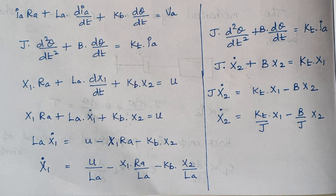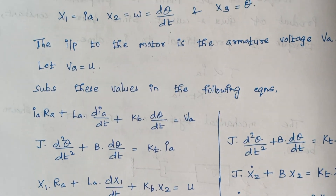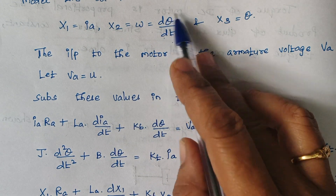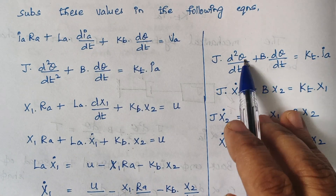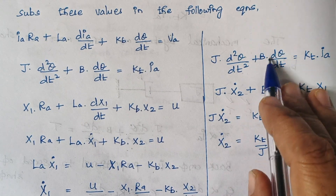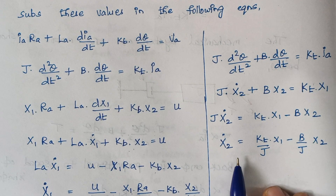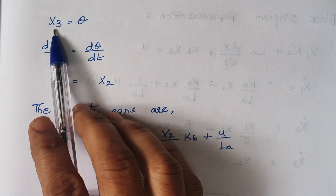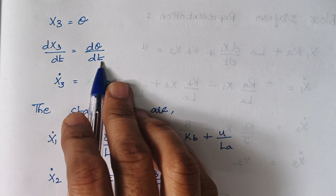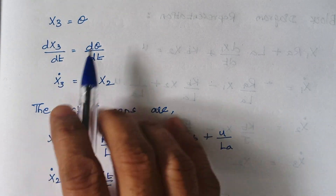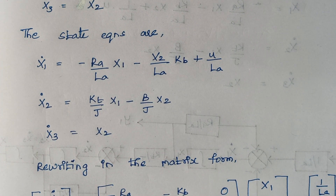Now consider the second equation. Replace the values: dθ/dt is X2, so d²θ/dt² is X2 dot. So J·X2 dot + B·X2 = KT·X1. Rearrange to frame an expression in terms of X2 dot. Also, since X3 = theta, differentiating gives X3 dot = dθ/dt = X2. Now we have expressions for X1 dot, X2 dot, and X3 dot as the state equations.